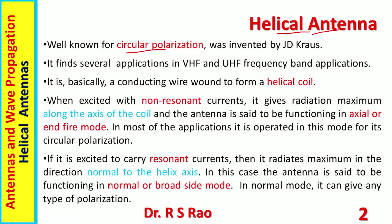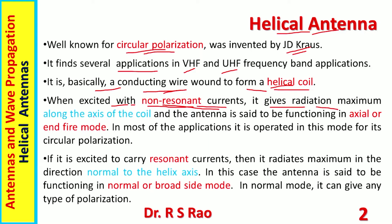Helical antennas are well known for their circular polarization. They were invented by Kraus. They find several applications in VHF (very high frequency) and UHF (ultra high frequency) regions. Basically, a helical antenna is a conducting wire wound in the form of a helical coil. When excited with non-resonant traveling wave currents, it gives radiation maximum along the axis of the coil, and the antenna is said to be functioning in axial or end-fire mode. In most applications it is operated in this mode for its circular polarization.